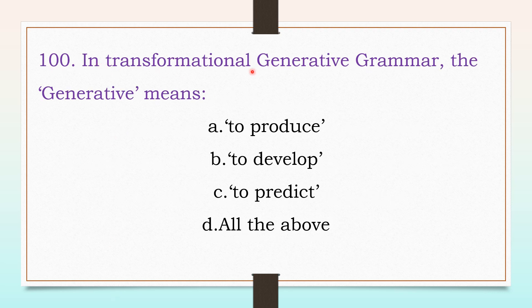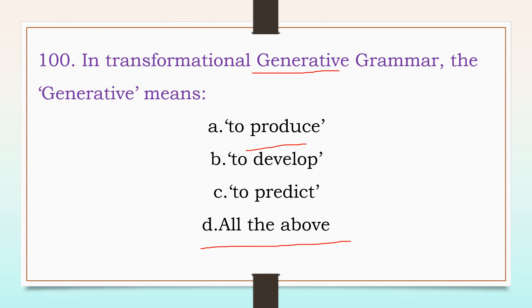In transformational generative grammar, the word 'generative' means: to produce, to develop, to predict, or all the above. The answer is D, all the above. So 'generative' means to produce, to develop, and to predict.